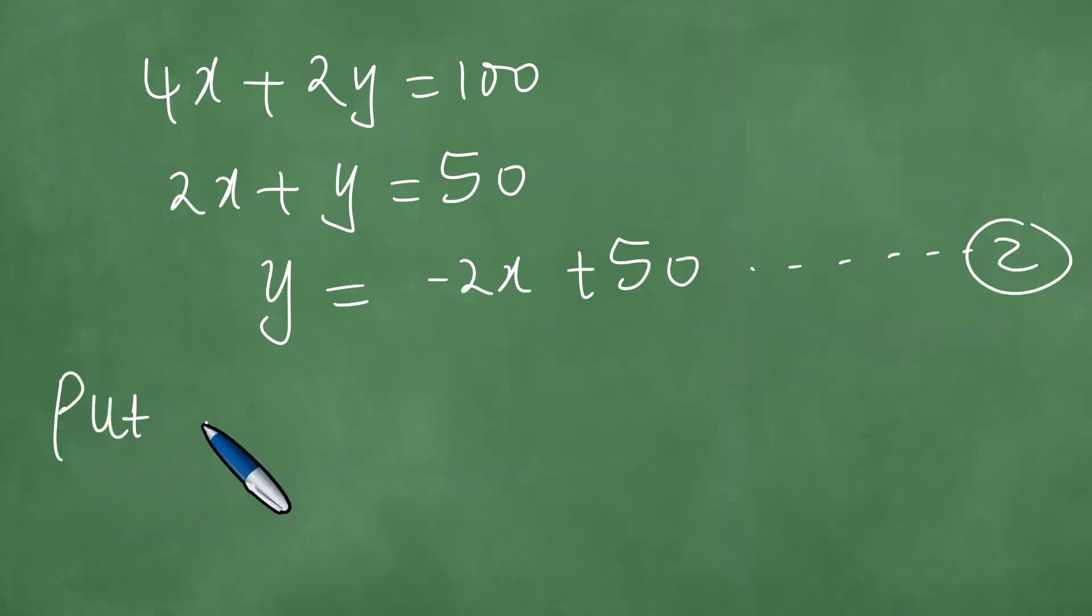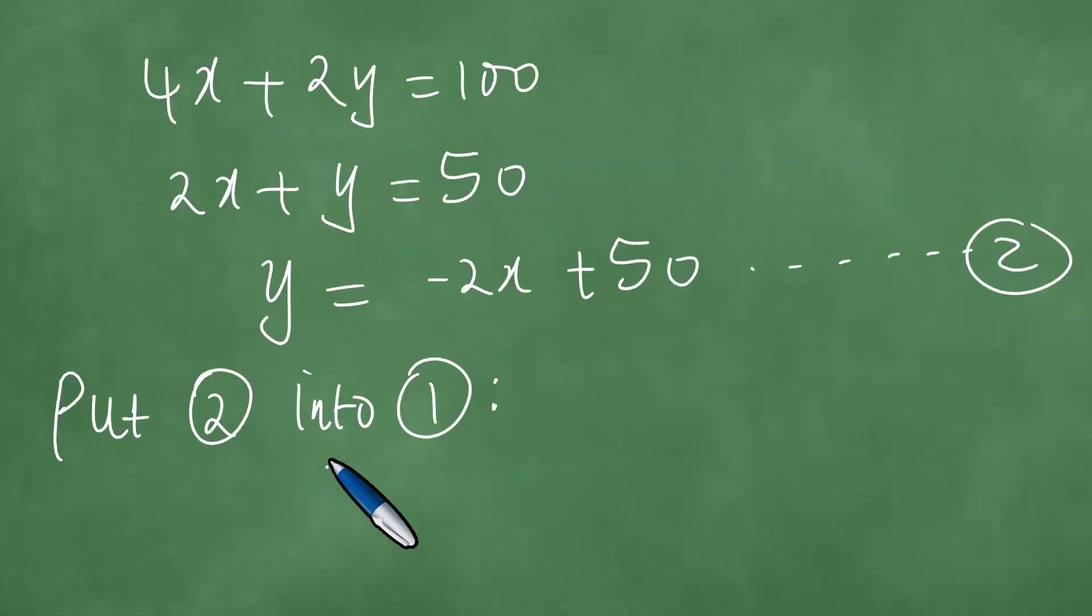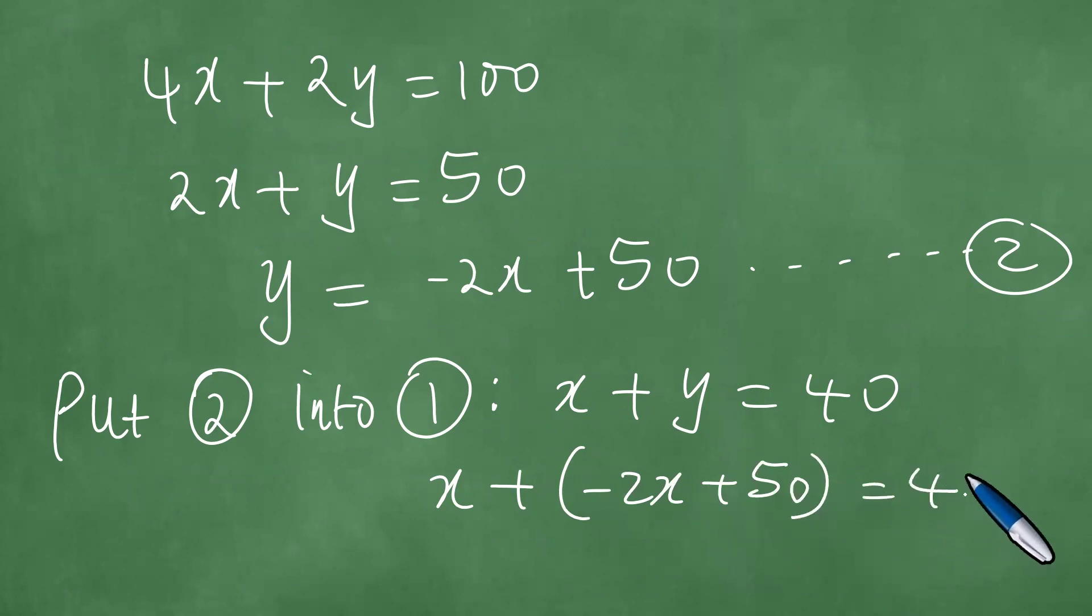So what you do, you put equation 2 into equation 1, so that wherever there is Y in one, you put minus 2X plus 50. So here we know that equation 1 is X plus Y equals 40, which is X plus minus 2X plus 50, which is 40.